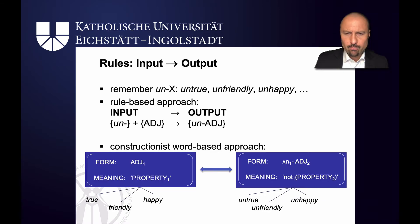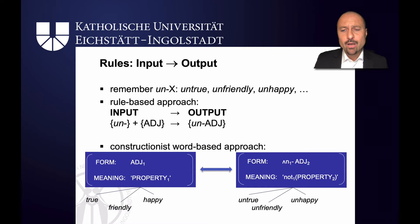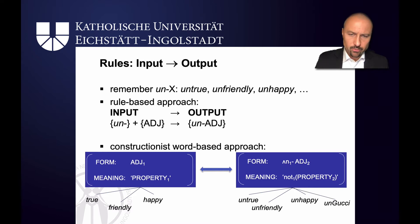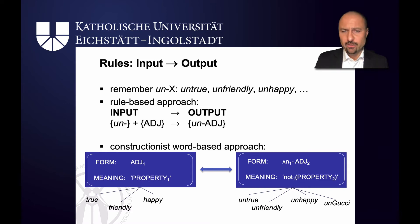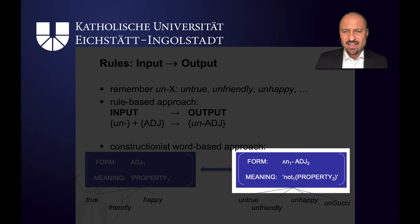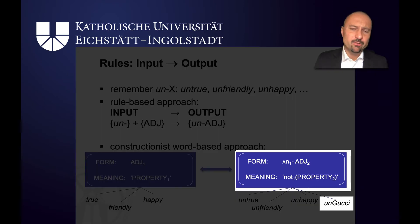So far, both approaches — rule-based as well as word-based — seem to give us the same kind of phenomena. But there is a crucial difference. Remember 'ungucci'? In one of the videos on YouTube, a kid used the phrase 'this was so ungucci.' Gucci didn't exist in my lexicon as an adjective, so I couldn't use a rule going from Gucci to ungucci. In contrast, I had an un-adjective schema meaning 'not property,' so when I heard 'ungucci' I was able to match it against the schema and understand it as meaning something like 'not having the property of being Gucci.'